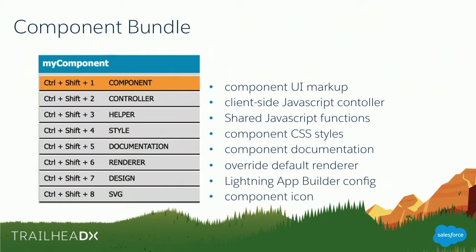Then we have styling — all the CSS, all the prettiness that the component is going to have — goes into the style section using CSS. Then we have the documentation section where you can put documentation about how to use this component, basically for external people using your component. Then we have the renderer, which modifies the custom rendering behavior of a component. And then we have a design section — to make the component configurable inside the App Builder — and an SVG section where you create an icon for this component using Scalable Vector Graphics.